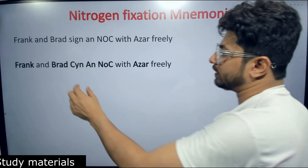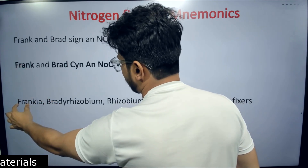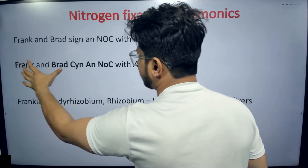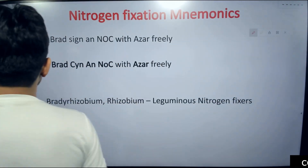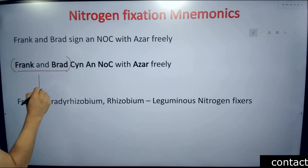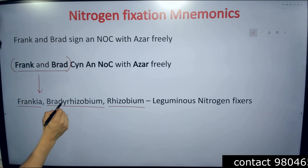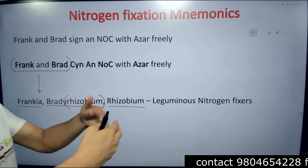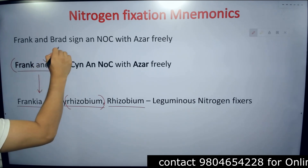Let's move to the very first segment: Frank. Frank gives us Frankia. Then Brad is Bradyrhizobium, and we also get Rhizobium. So from the 'Frank and Brad' segment, we get Frankia, Bradyrhizobium, and Rhizobium. These are leguminous nitrogen fixers, meaning they colonize in the root nodules of plants and form root nodule structures.